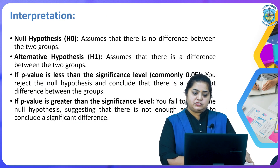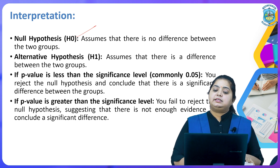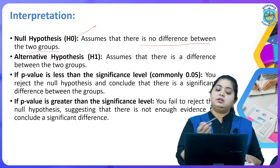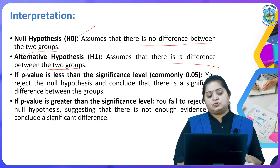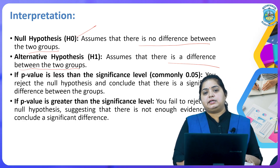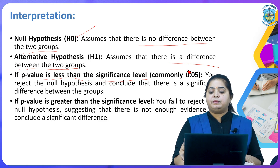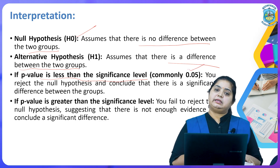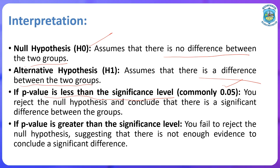These are the interpretation rules. The null hypothesis assumes there is no significant difference between the two groups or variables. Conversely, the alternative hypothesis states there is a significant difference between the two groups. Interpretation is based on the p-value: if your p-value is less than the significance level — commonly 0.05 — you reject the null hypothesis and conclude there is a significant difference between the groups. If your p-value is greater than the significance level, you fail to reject the null hypothesis.